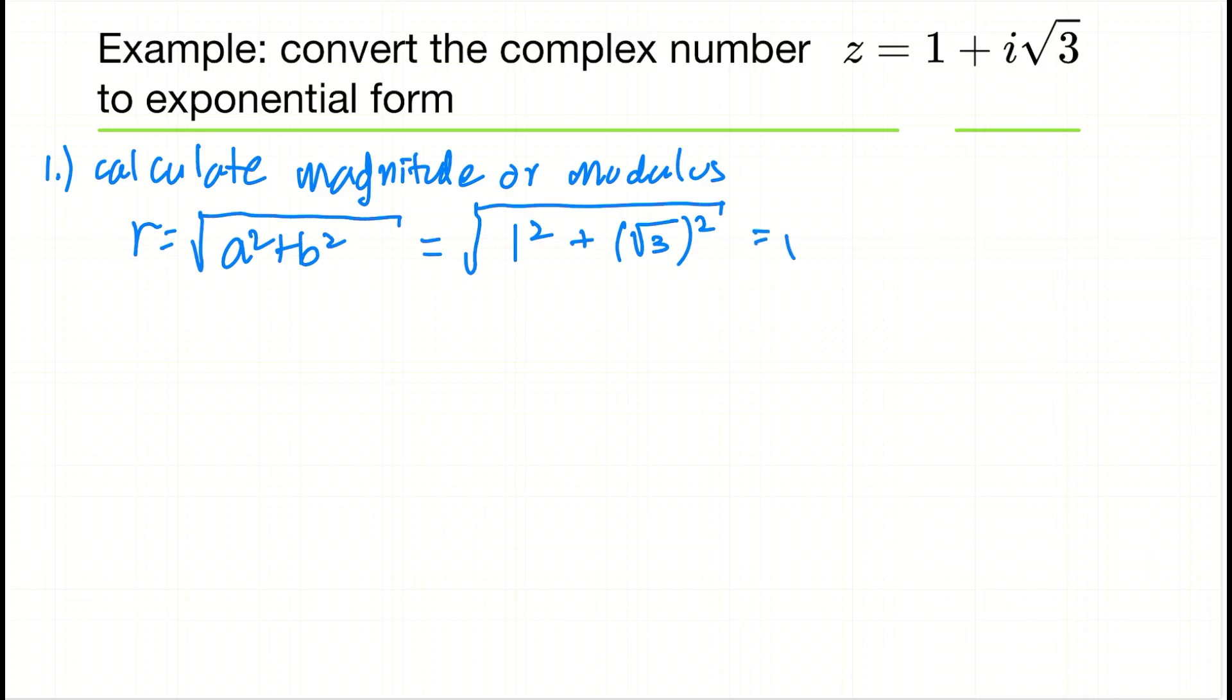Now, this turns out to be 1 squared is 1 plus (√3) squared is 3, giving us √4, and the square root of 4 is 2. So that's the modulus or magnitude.